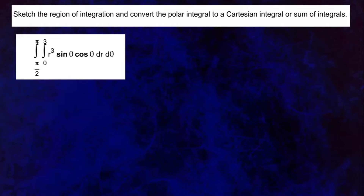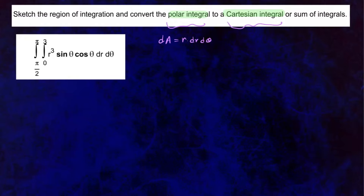In this problem, we're going to be sketching this region and then converting the polar integral to a Cartesian integral or a sum of integrals. You have to remember that when you have a double integral written in polar, your dA is going to be r dr dθ. And when converting to Cartesian, dA could be either dy dx or dx dy — two different ways in the rectangular coordinate system.